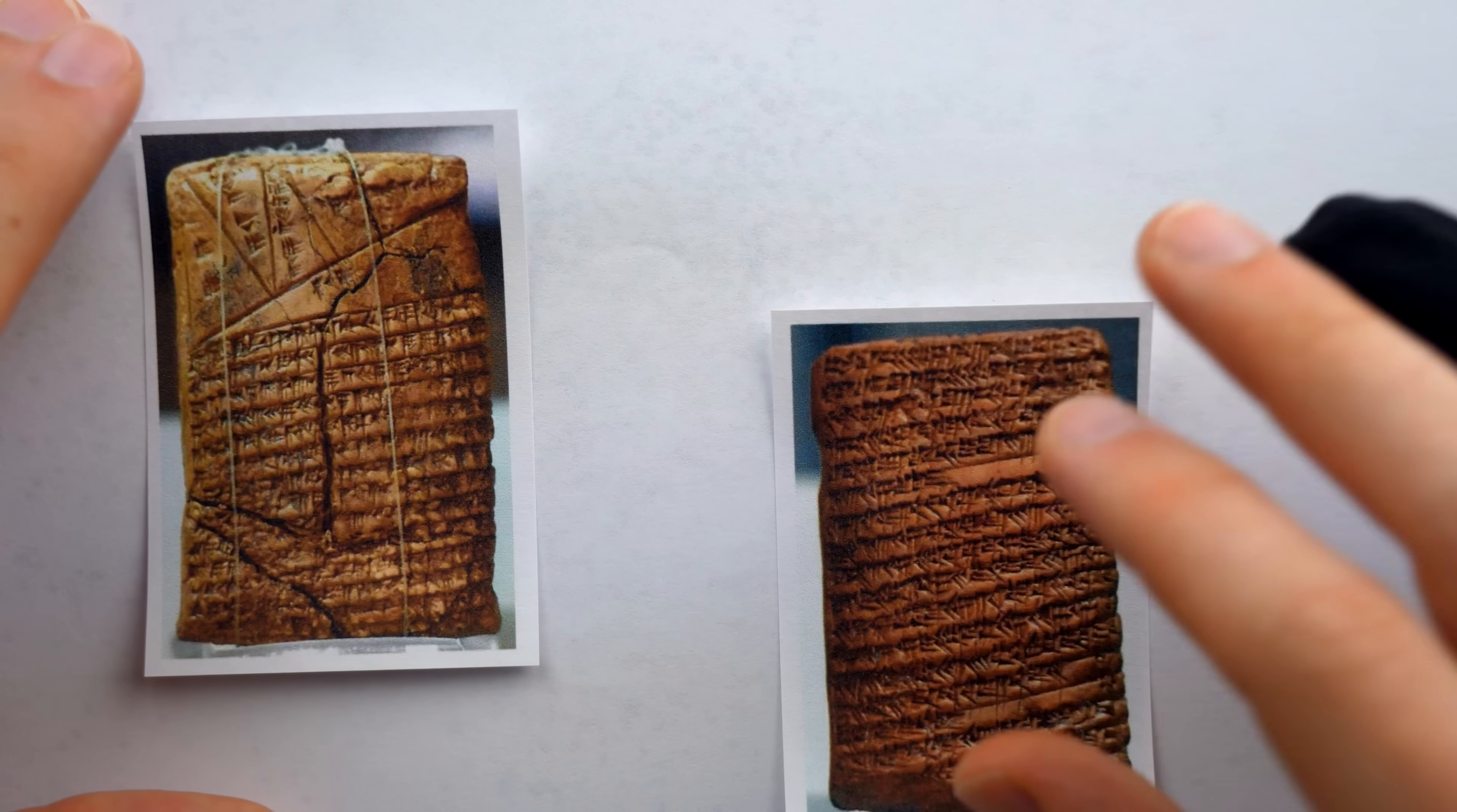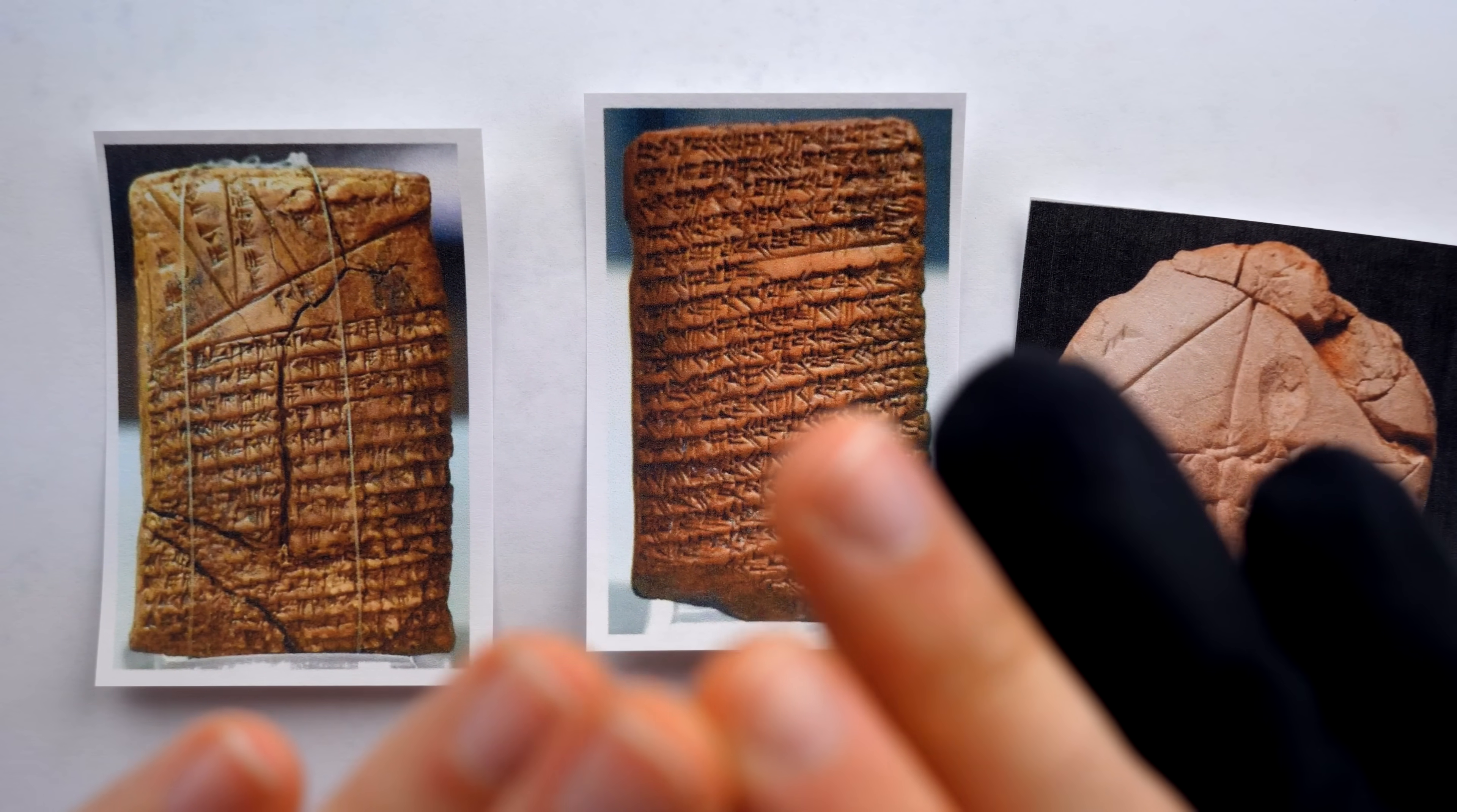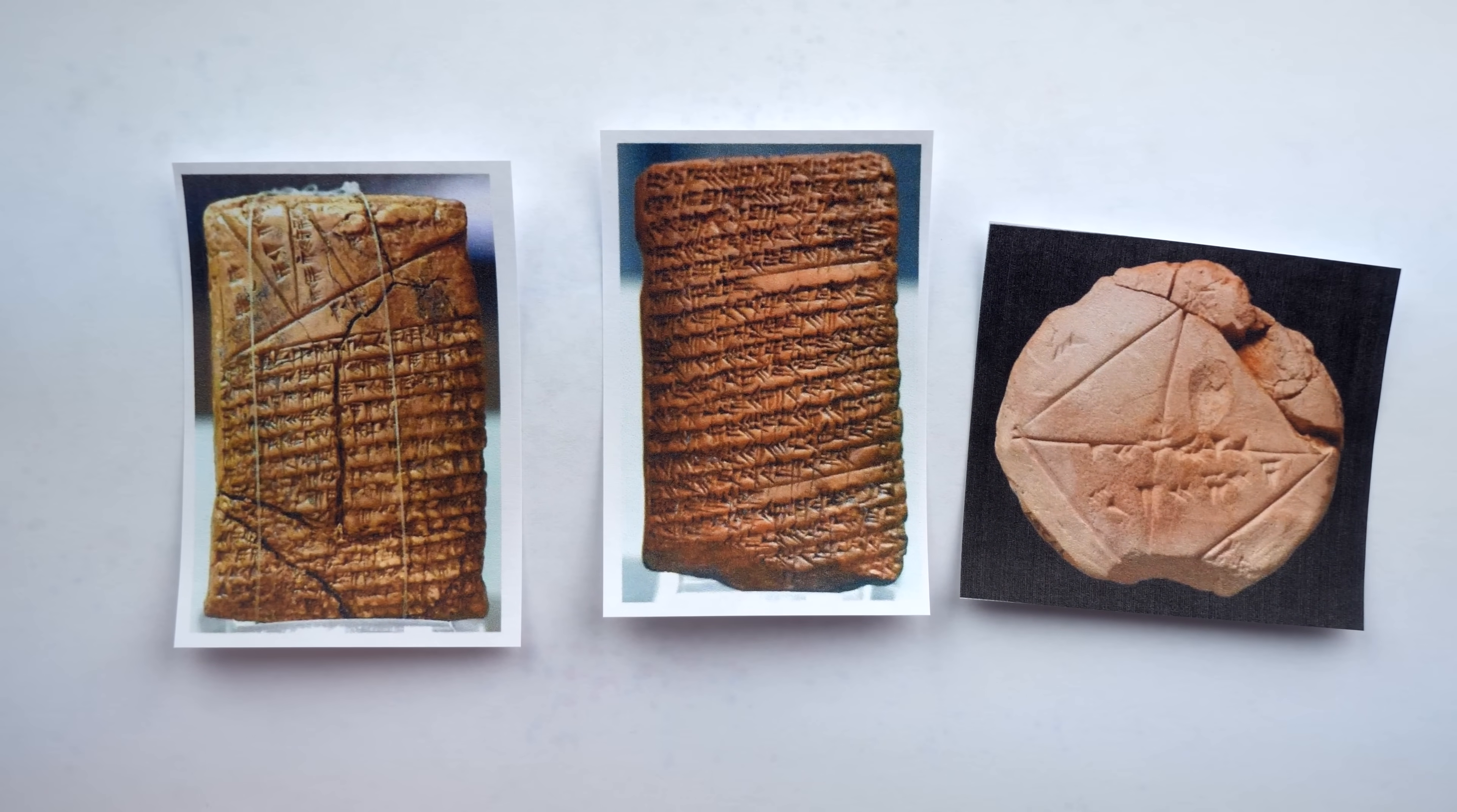Not only because so much of their math was recorded on clay tablets, of which hundreds have survived and been discovered, but some of their actual math, like their place value number system that used base 60, has survived until today.